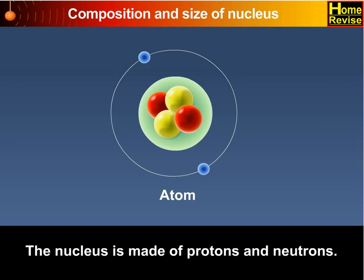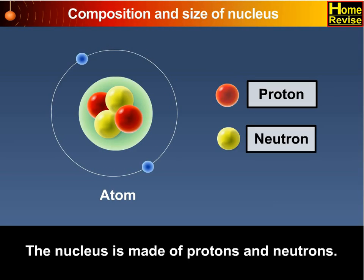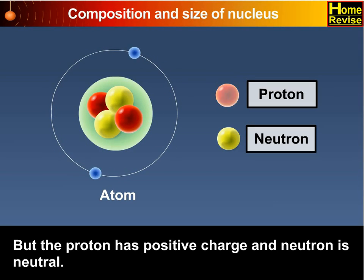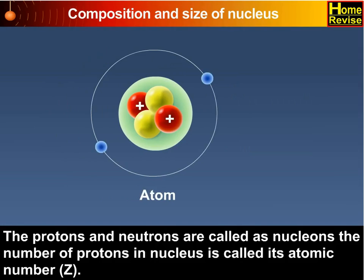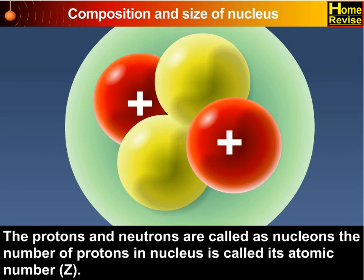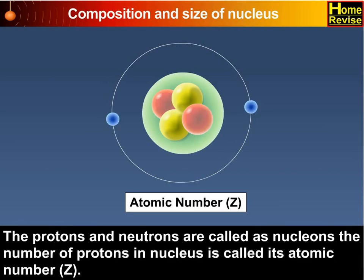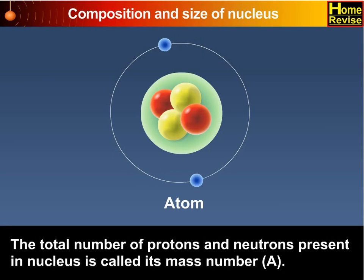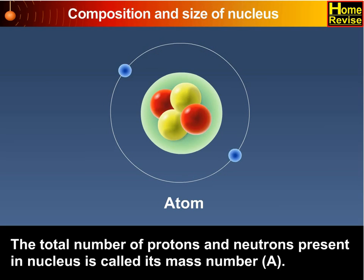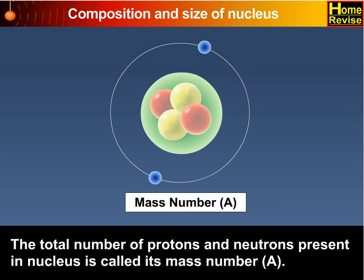The nucleus is made up of protons and neutrons. The proton has positive charge and the neutron is neutral. The protons and neutrons are called Nucleons. The number of protons in the nucleus is called its atomic number Z. The total number of protons and neutrons present in the nucleus is called its mass number A.